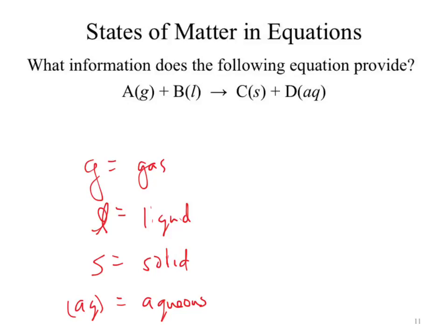So we've got phase information. What else is in the equation? The arrow means a reaction occurred — which I'll often abbreviate as RXN. Along those same lines, the species on the left of the arrow are reactants, and the species on the right are products.